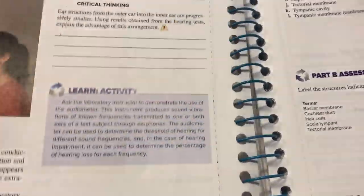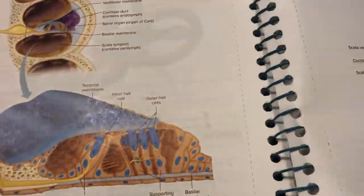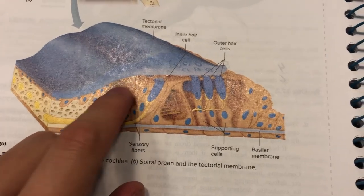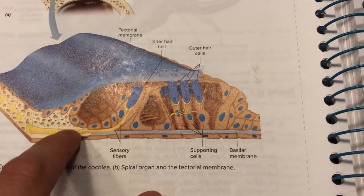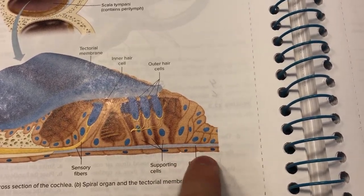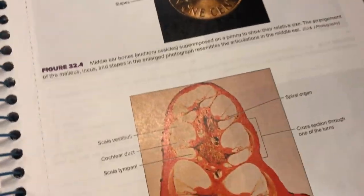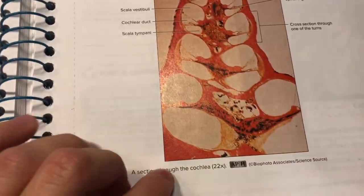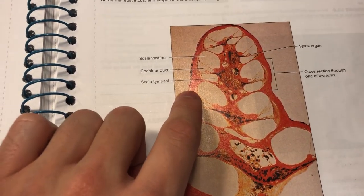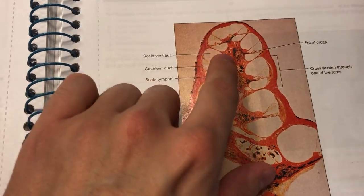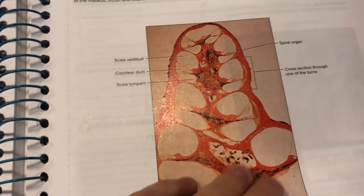So these hairs pick it up and you have supporting cells, sensory fibers along here, the basilar membrane, outer hair. And so then this one right here is a section as well of the cochlear duct.